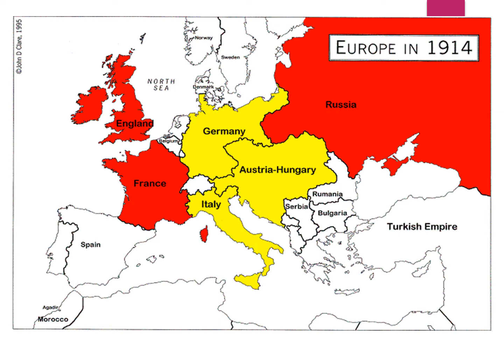By 1914, Europe was divided between two sides: the Allies — Russia, France, England — on one side, and Germany, Austria-Hungary, and Italy with their own strong alliances on the other. This strong division meant that local conflicts that should have remained local would instead draw in allies, causing them to spread to larger areas and eventually into a world war.